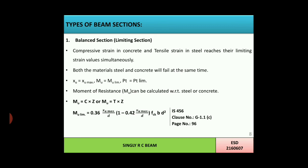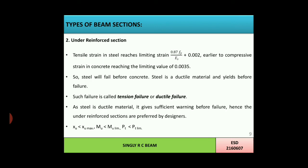The formula for the balanced (limiting) section is: Mu limit = 0.36·(XU max/d)·[1 − 0.42·(XU max/d)]·FCK·b·d². This is given in IS 456, page 96, clause G1.1C.